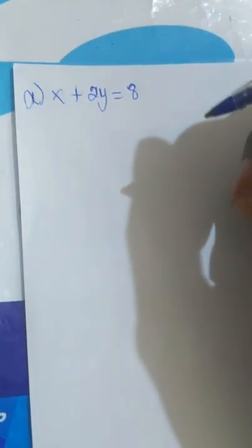Today we're solving some simultaneous equations. The first one, let's say part a: we have x plus 2y equal to 8, and 2x plus y equal to 10. Let's take this as equation one and this as equation two.